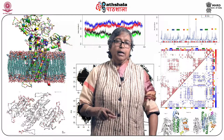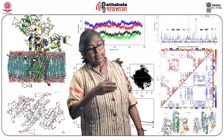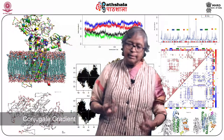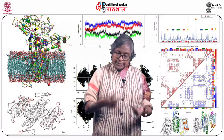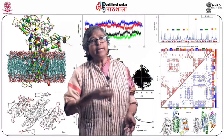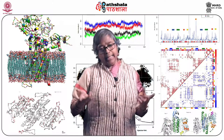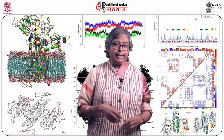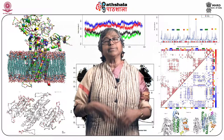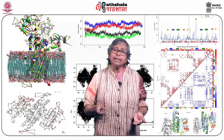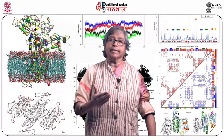Beyond steepest descent, we can calculate the conjugate gradient, which simultaneously calculates first and second derivatives of different degrees of freedom. It can calculate gradients of torsion angles and bond length changes simultaneously, with respect to both Cartesian coordinates and internal coordinates such as bond length, bond angle, and rotation angles.